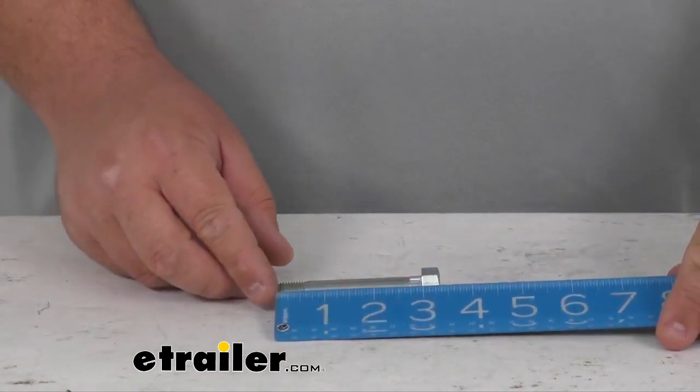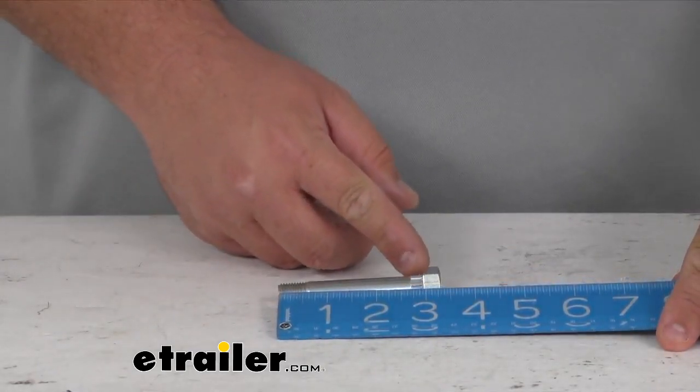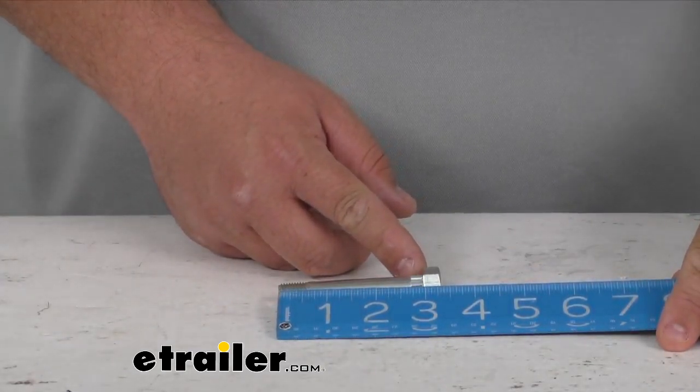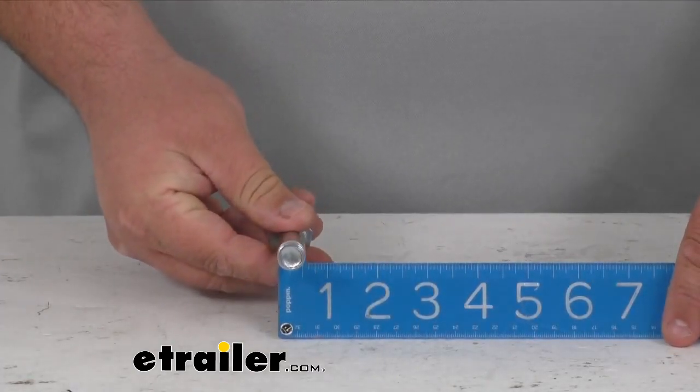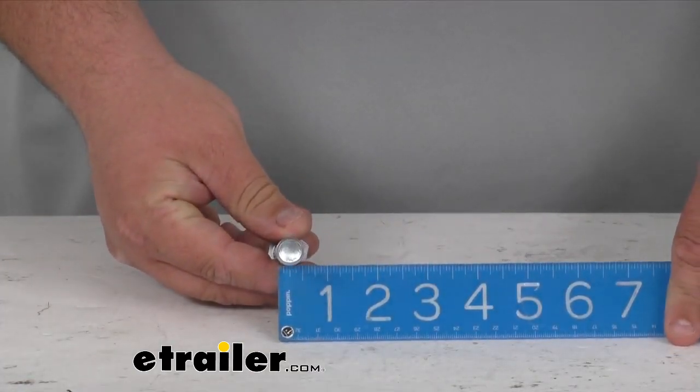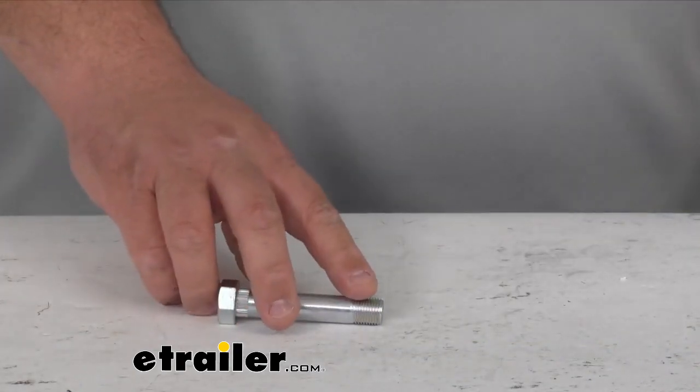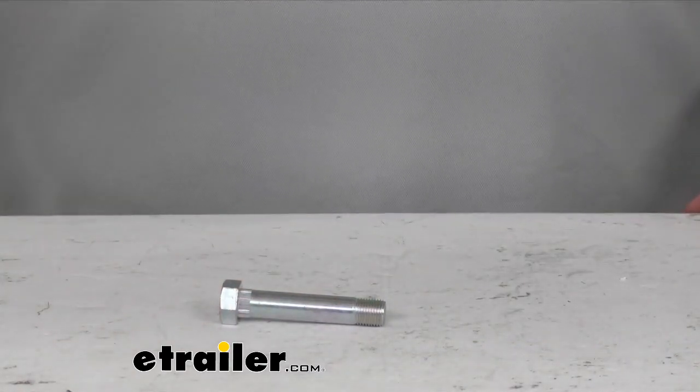This is three inches long from the threads all the way to the bottom of the bolt head and it is nine sixteenths of an inch thick. It has an 18 thread count which is going to provide excellent grip for you.